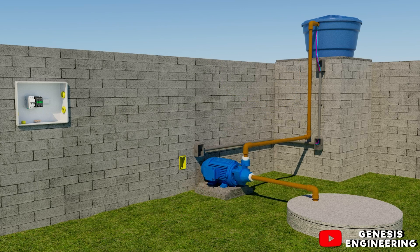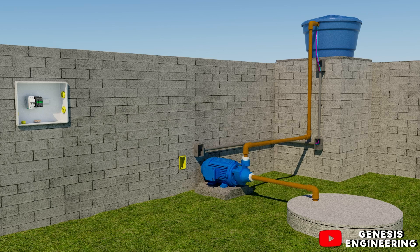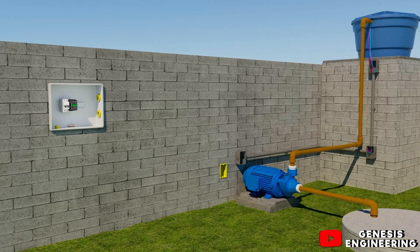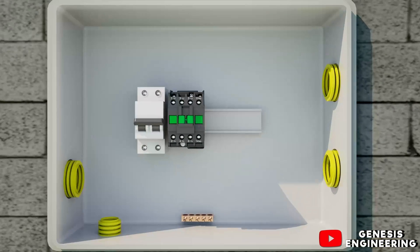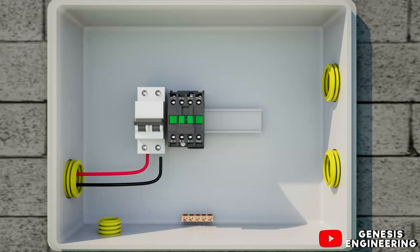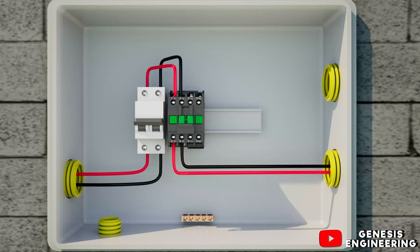To wire the float switch on the pump, we first have to wire the circuit. In the miniature circuit breaker MCB we connect the phase conductor and the neutral conductor. We leave with the phase and neutral conductors of the MCB and connect the contactor on terminals 1 and 3, we leave with the phase and neutral on terminals 2 and 4 of the contactor to connect to the pump.